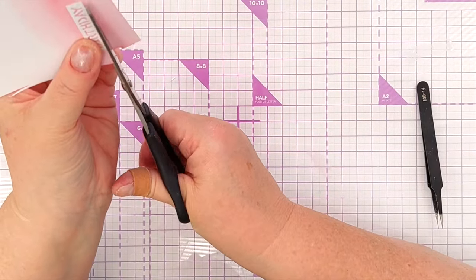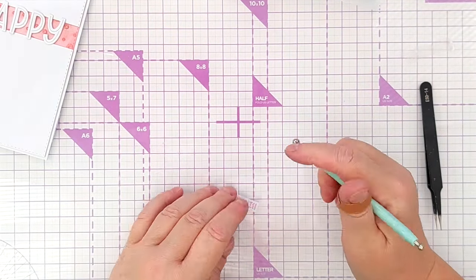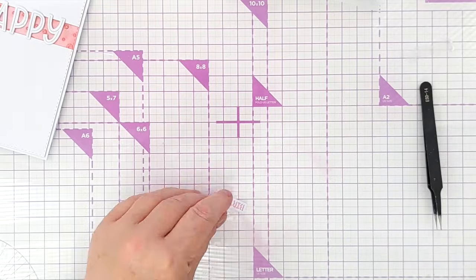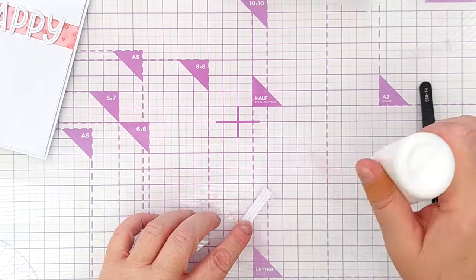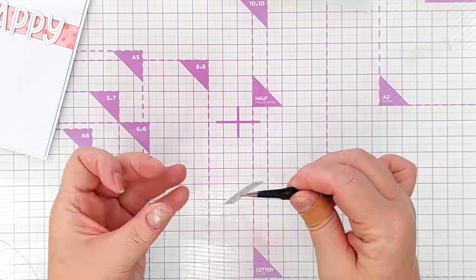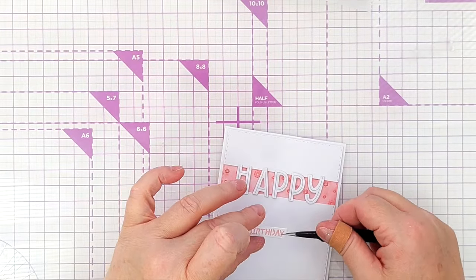I trimmed it out with some scissors and now I'm just beveling the edges with my embossing tool so that the whole thing looks die cut rather than snipped. To stick it on I'm using some matte gel medium again and placing it to the right hand side underneath the word happy.